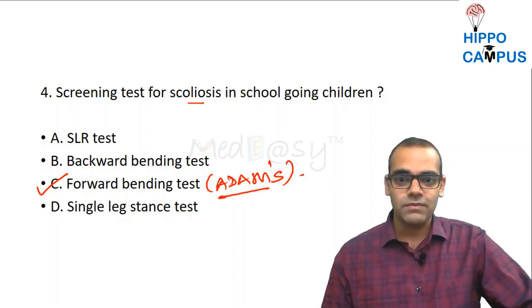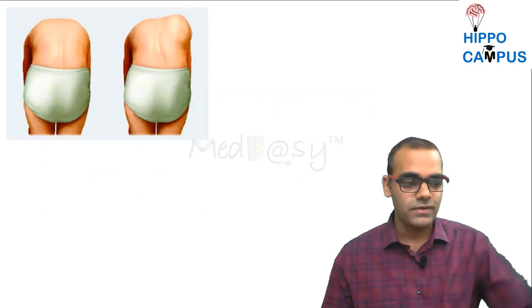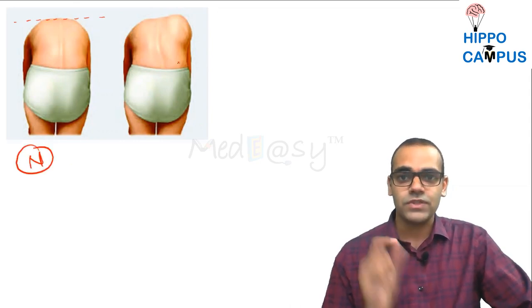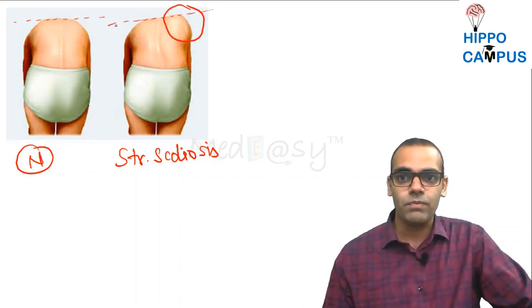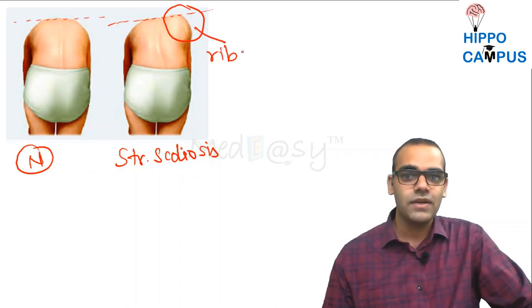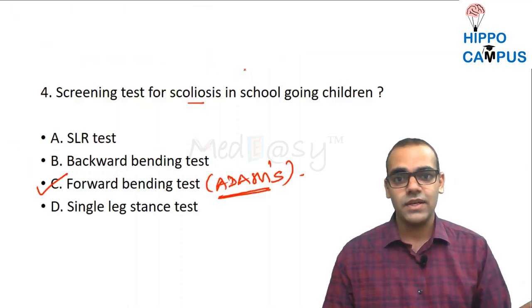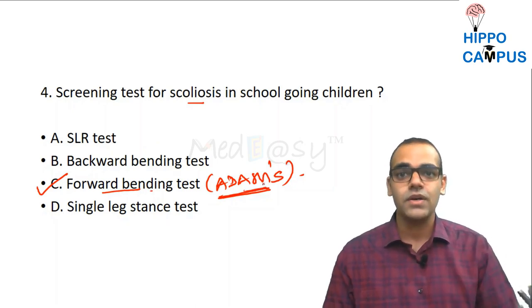The Adams' forward bending test identifies true structural scoliosis versus postural scoliosis. When you ask the patient to bend forward, in postural scoliosis the back is normal and flat. In structural scoliosis there will be a rib hump — the level of the back will not be the same on both sides. So the test detects structural scoliosis. On forward bending, postural scoliosis disappears whereas structural scoliosis is revealed by the presence of a rib hump.